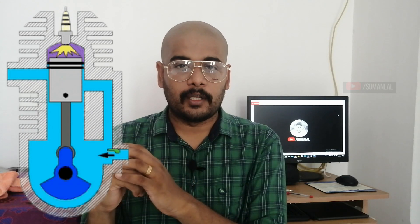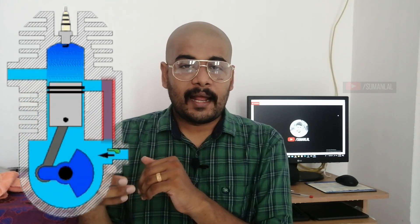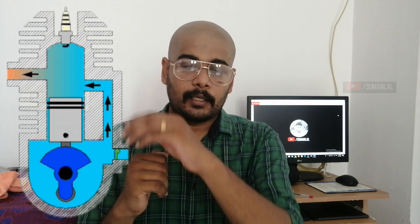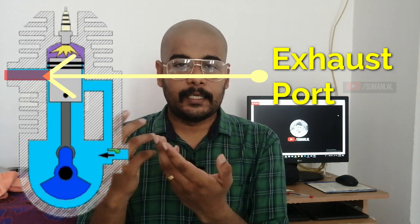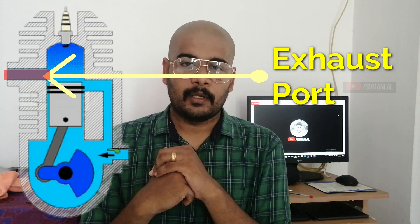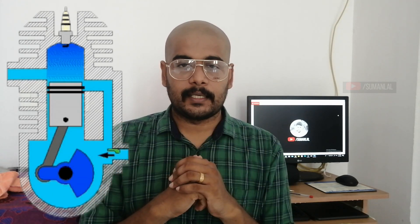We use an air-fuel mixture in the front of the air-fuel mixture. The air-fuel mixture is in the inlet port. This is a transfer port. This transfer port connects the air-fuel mixture and combustion chamber. This is an exhaust port. How do we get this exhaust port and transfer port?